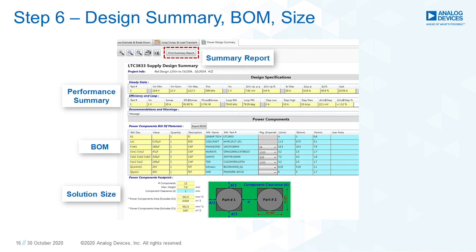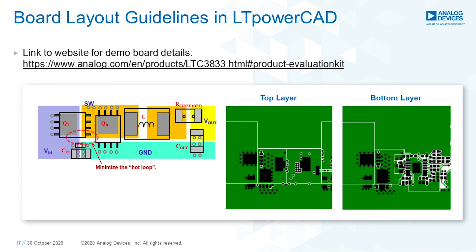The next step is to generate the design summary report, which includes a performance summary of important parameters such as voltages, efficiency, ripple, and a detailed bill of materials and estimated solution size. There is also a board layout guideline summary that gives you hints on the best component placement and provides a link to the actual demo board design files for a detailed layout example.